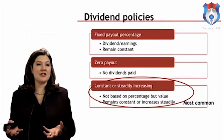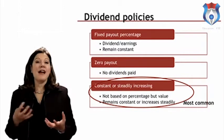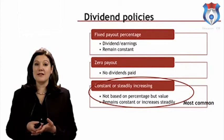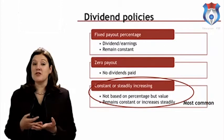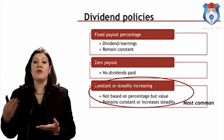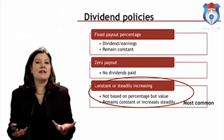The first dividend policy is a fixed payout percentage — every year you pay out a fixed percentage of profits earned to shareholders. For example, if a company earns £100 profit and the payout ratio is 5%, it would pay out £5 as dividends. This policy is great because it's determinable by shareholders and reflects earnings performance. However, it's not a fixed amount, so shareholders can't know exactly what's coming. The second option is a zero permanent payout — easy to implement with no calculations, shareholders know where they stand, but in today's market where investors demand dividends, this policy risks driving shareholders to other investments.